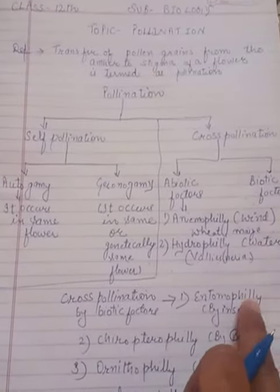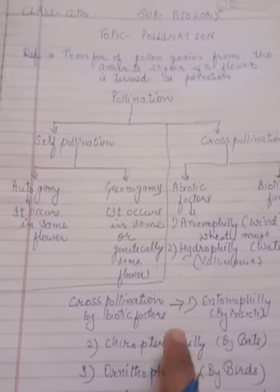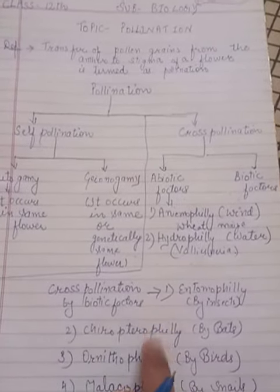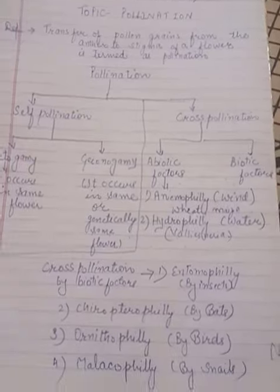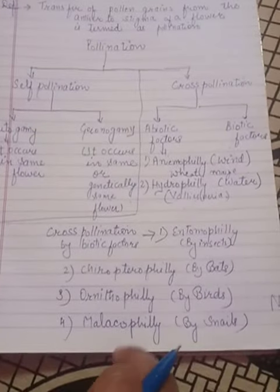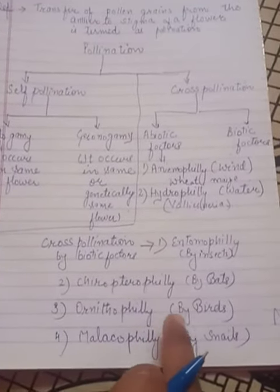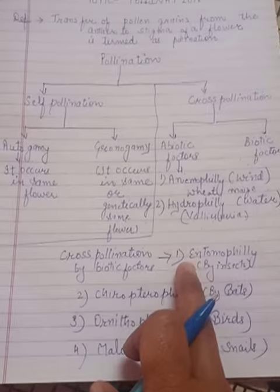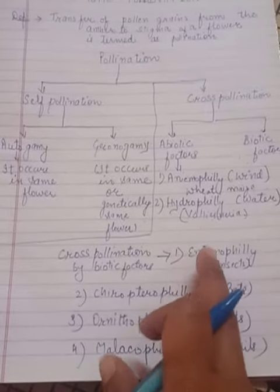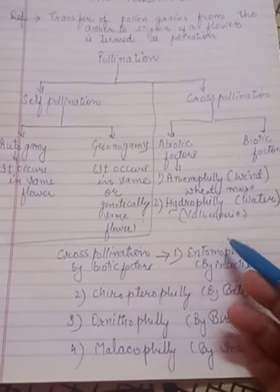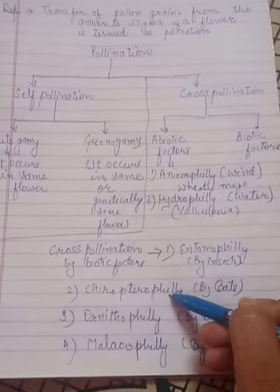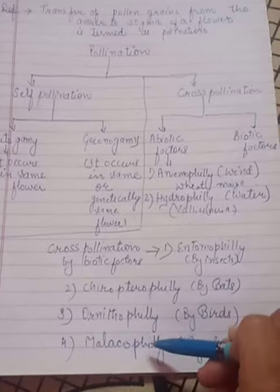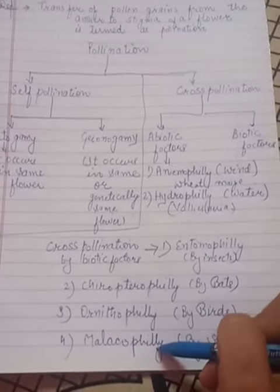Another category is biotic factors, where insects, animals, and birds act as agents. Four types of cross-pollination occur by biotic factors: entomophily, chiropterophily, ornithophily, and malacophily.